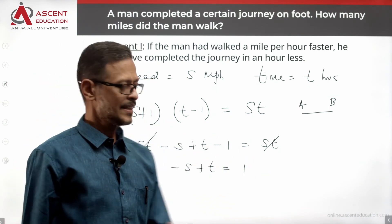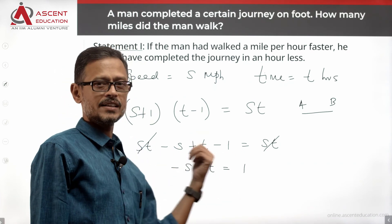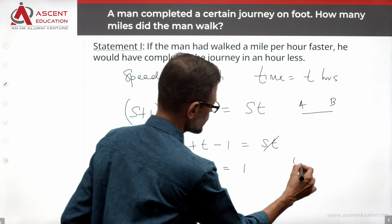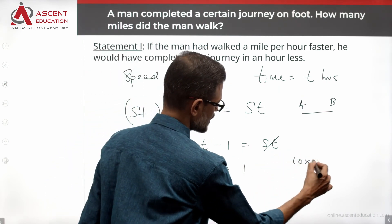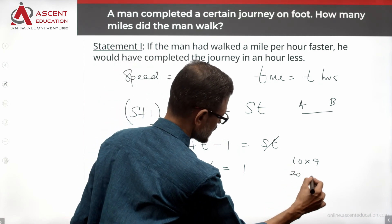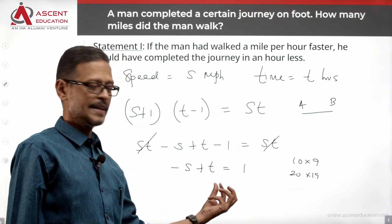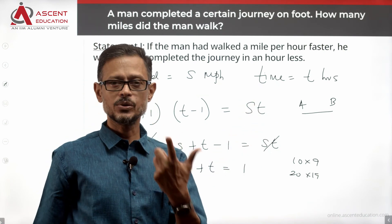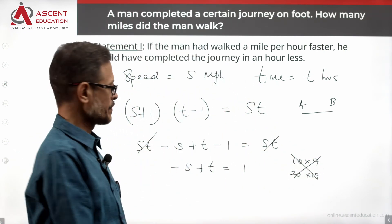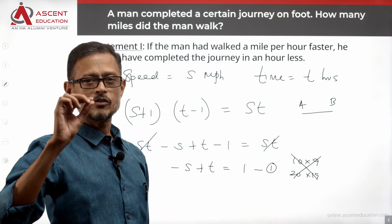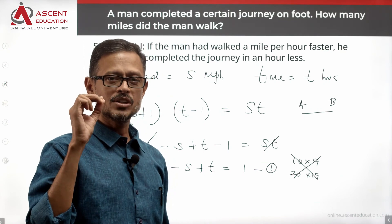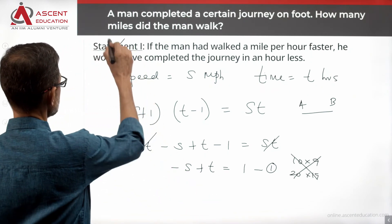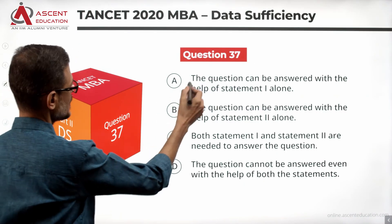The equation T minus S equals 1 has two variables and one equation, so multiple values are possible. For example, T=10, S=9 gives distance = 90; T=20, S=19 gives distance = 380. We are not able to find a unique value for S and T, therefore we cannot find a unique value for distance. Statement 1 alone is not sufficient — eliminate answer option A.